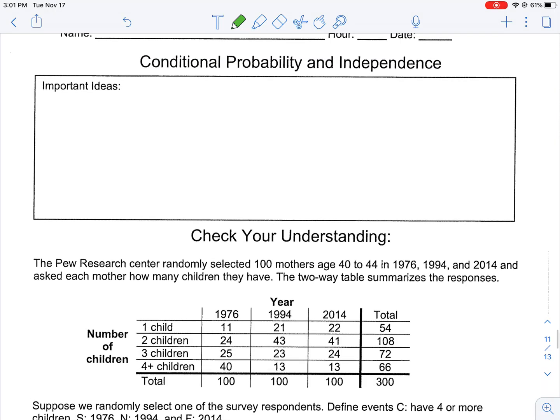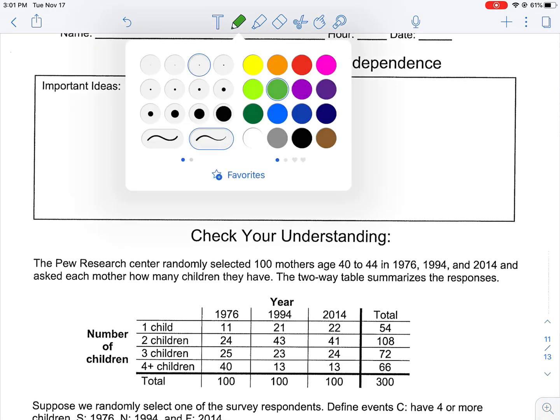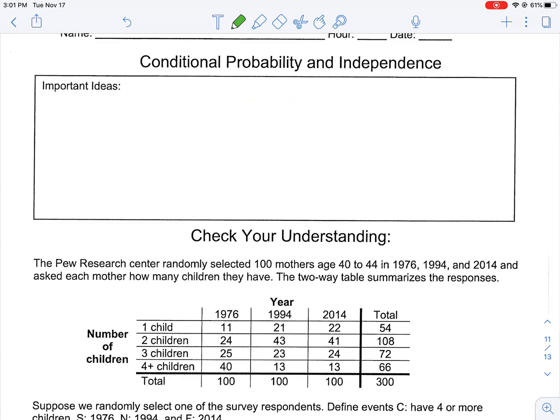Welcome back. Today we're going to talk about conditional probability and independence. Conditional probability is the probability that something happens given that something else happened.